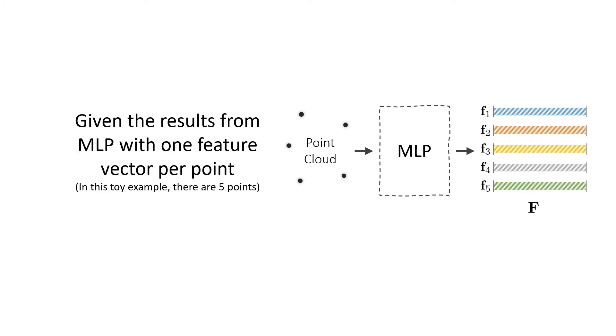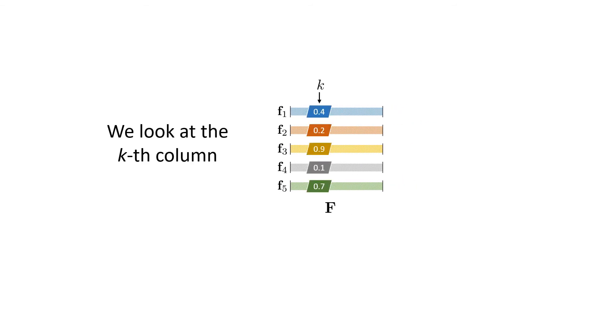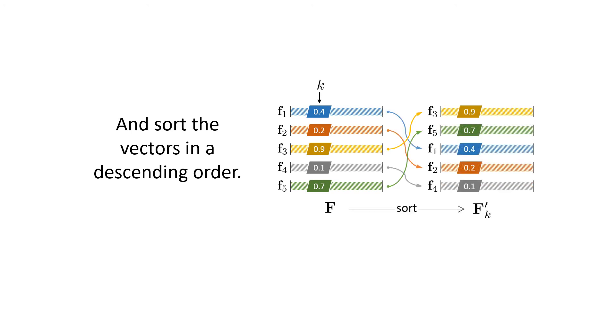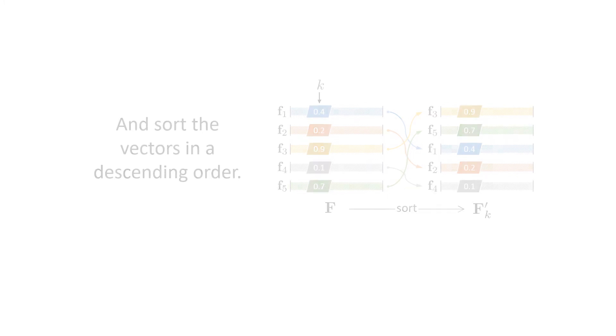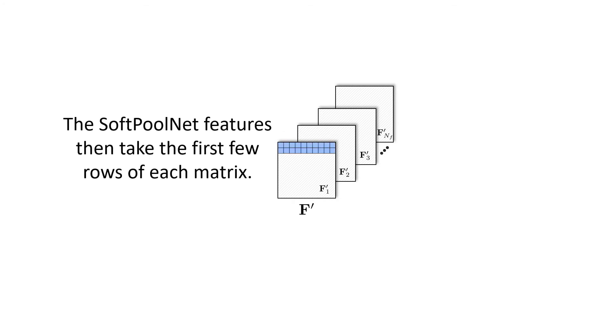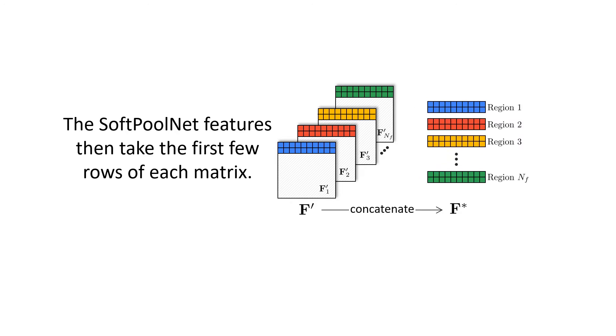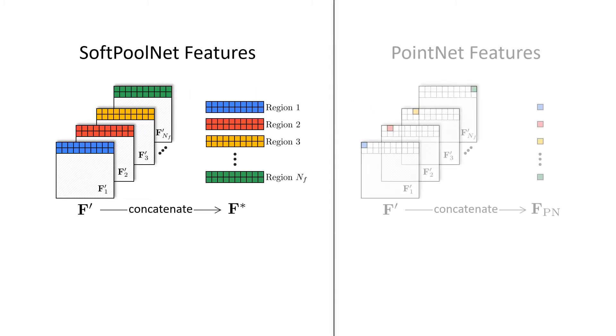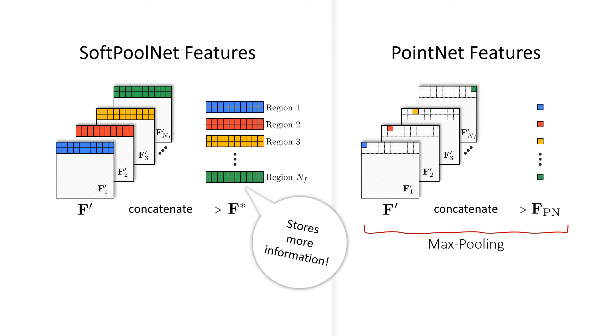Let's start with a toy example where a point cloud contains five points. Given the results from MLP with one feature vector per point, we look at the kth element across all vectors, and sort the vectors based on these values in a descending order. After repeating the process for all the columns, we then take the first few rows of each matrix to form regions, and concatenate them to build the SoftPoolNet feature. With a side-by-side comparison with PointNet, we can clearly observe that the proposed feature stores more information while preserving the permutation invariance.